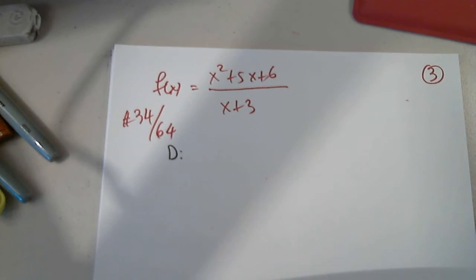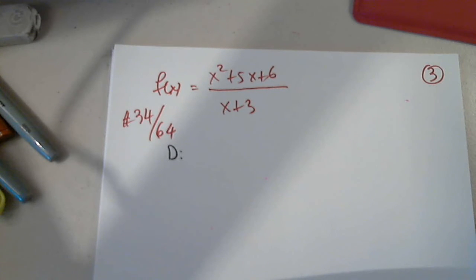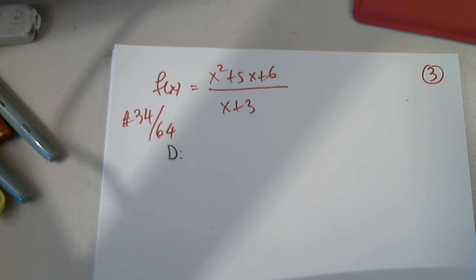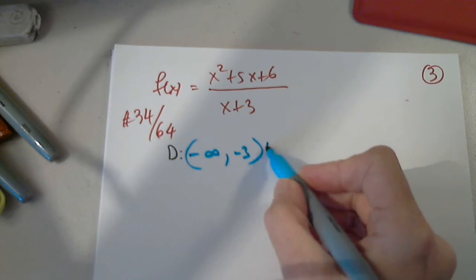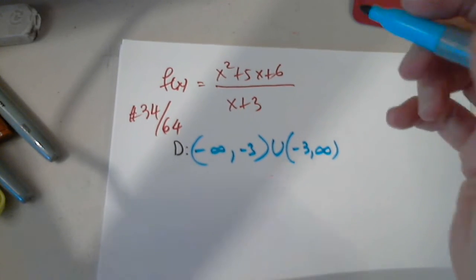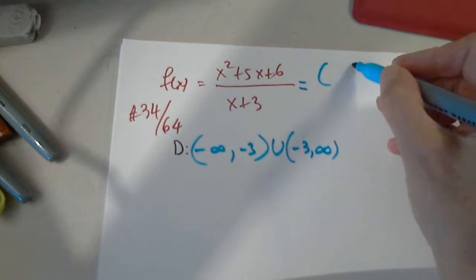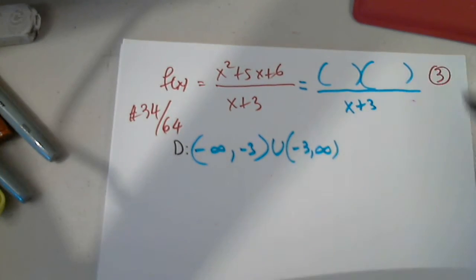The domain is what x can be. x plus 3 cannot equal 0, so x cannot equal negative 3. The domain is negative infinity to negative 3, union negative 3 to infinity. Only now can I factor the numerator. Can anyone give us the factored form? x plus 3 times x plus 2.